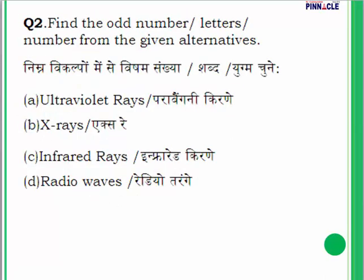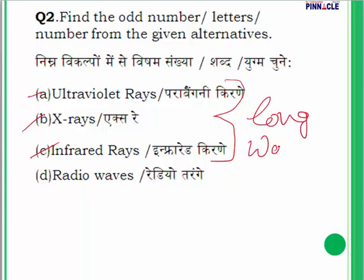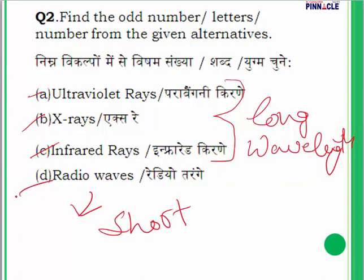Question number 2: we have to find the odd one out. Four options are given — ultraviolet rays, X-rays, infrared rays, and radio waves. Ultraviolet, X-rays, and infrared are all long wavelength waves. But radio waves are short wavelength waves. So radio waves is different from the other three. The correct answer is radio waves.